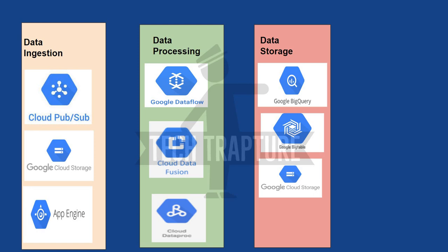Once data is available in a data warehouse, it can also be stored in relational databases like Cloud SQL or Cloud Spanner. For example, your data arrives in Cloud Storage as a CSV file, you apply some transformation, and then load it into Cloud SQL or Cloud Spanner. The destination data storage can be any of these options depending on your use case.